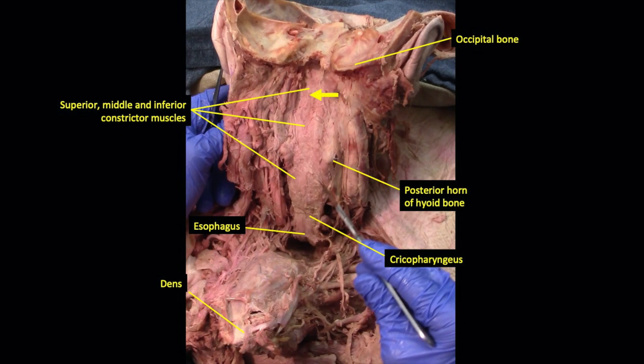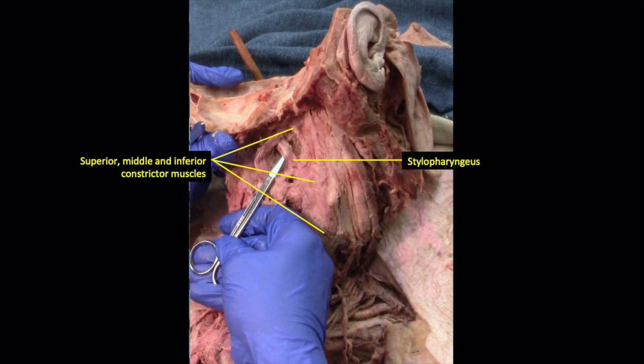We now look for the intervening space between the superior and middle constrictors at the area indicated by the yellow arrow. We will look for a muscle and a nerve separating the two constrictors. Dissecting the area using scissor technique, we find the stylopharyngeus muscle, a muscle that helps raise the pharynx during the process of swallowing. It takes its origin from the styloid process, and the stylopharyngeus is innervated by the glossopharyngeal nerve, cranial nerve 9. It is the only muscle that the glossopharyngeal nerve innervates before turning inward to reach the tonsillar bed and extend to the posterior one-third of the tongue.